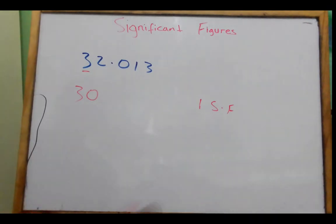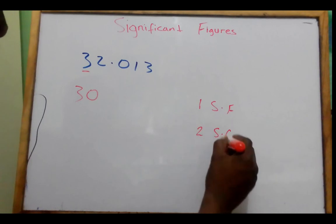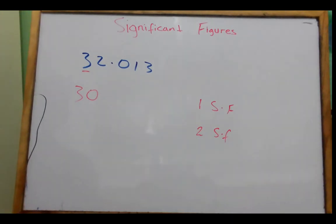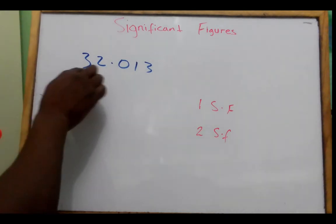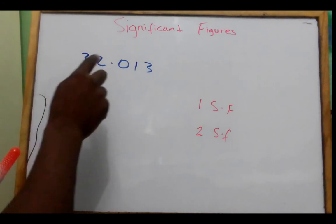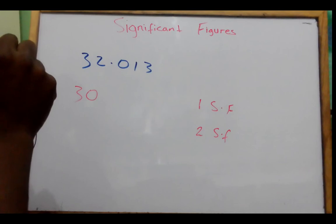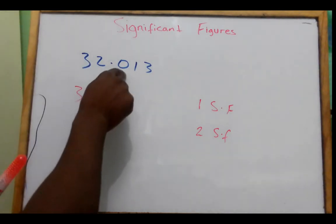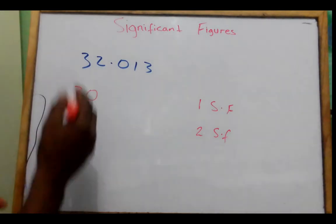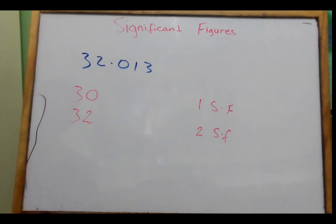Let us write 32.013 to 2 significant figures. The second significant figure is here, and we must look at the next number. Since this is less than 5, we write back 32. This is 2 significant figures.